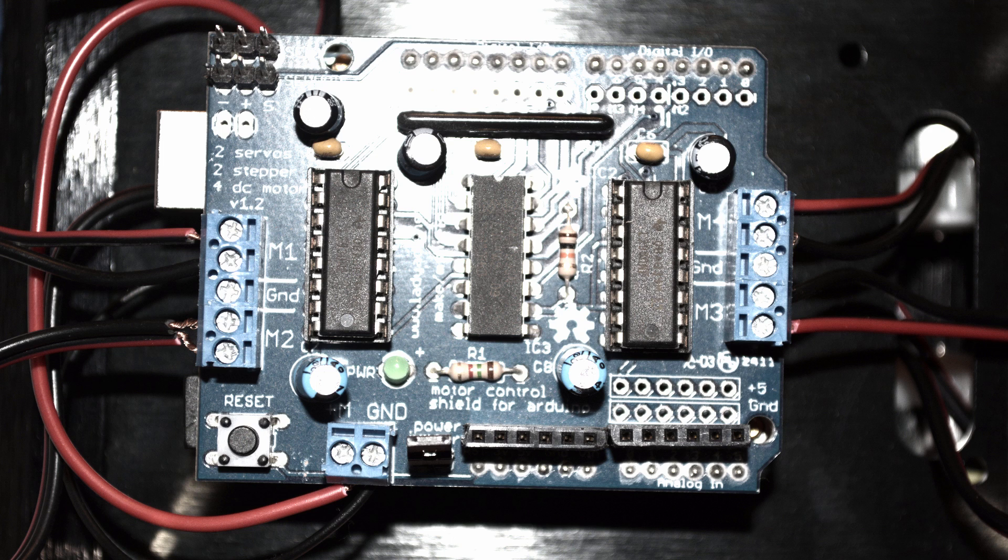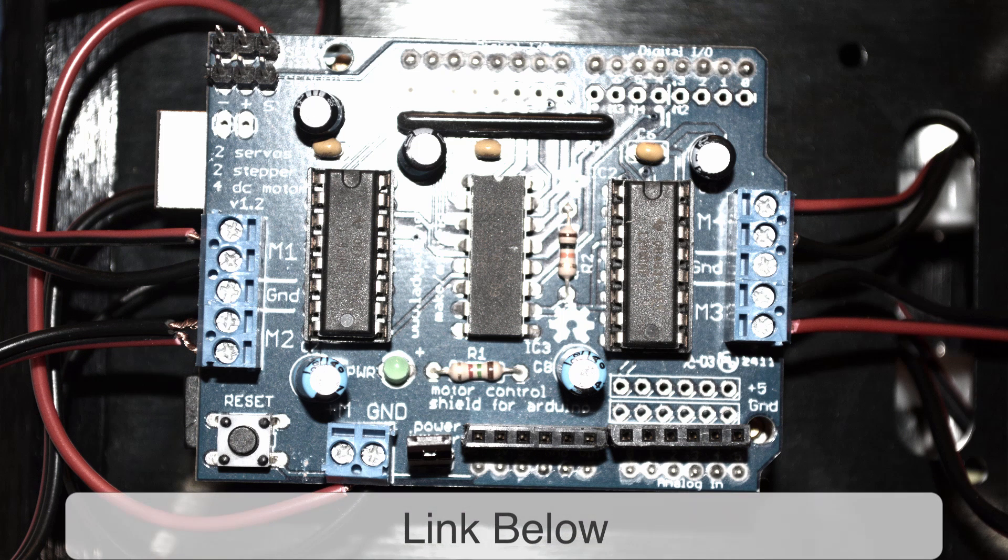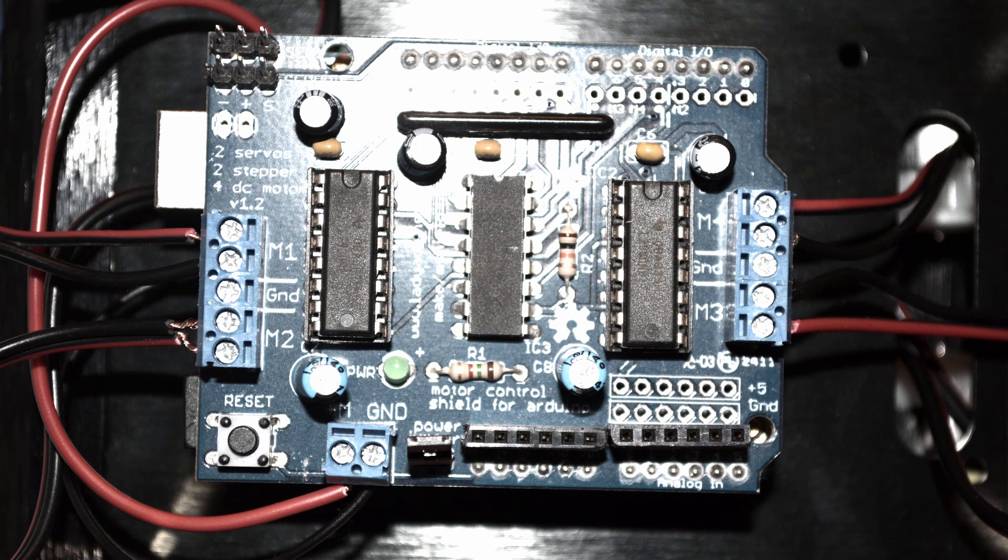At this point you may want to test that you have the motors attached correctly to the motor controller board by uploading a sketch to your Arduino. So I've got a simple sketch that works for the Adafruit motor library on my website. You can use that to test your setup. All it does is it just makes the four wheels rotate in the same direction. Now in order for that sketch to work you're going to have to download and install the Adafruit motor library into your Arduino IDE.